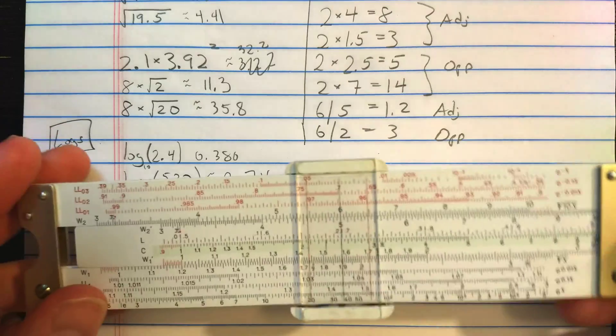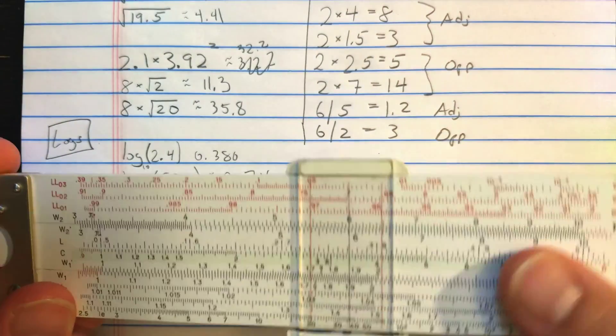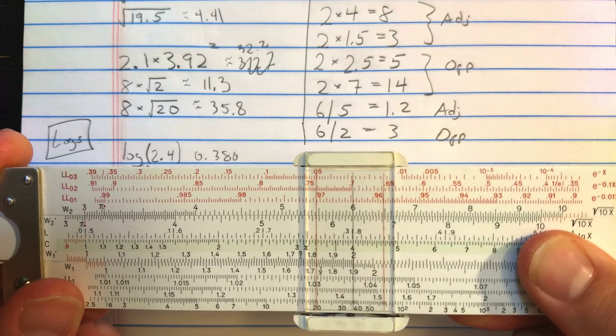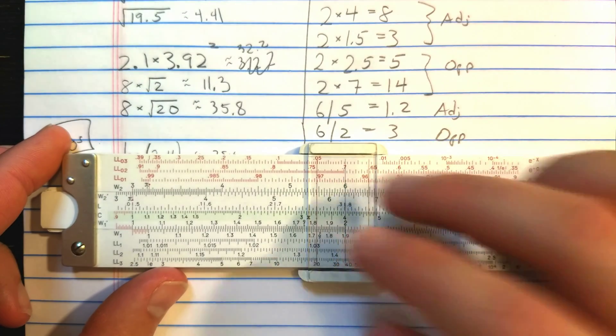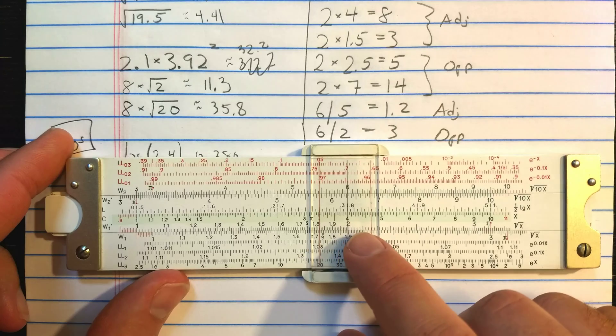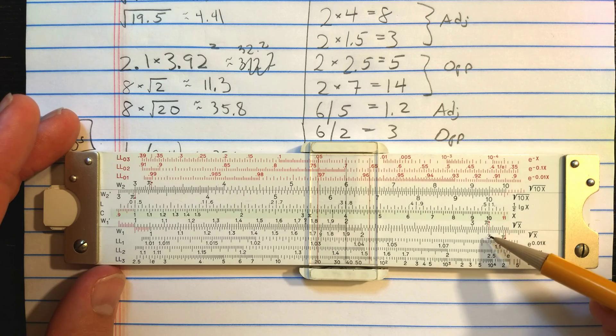If I wanted to do 6 divided by 2, I found the 6 already on W2. I see that the 2 is on W1 prime. Okay. That alignment, however, is opposite. 6 and 2 are opposite. So I should read correct result on a red index. So red index is here. Correct result there, 3.